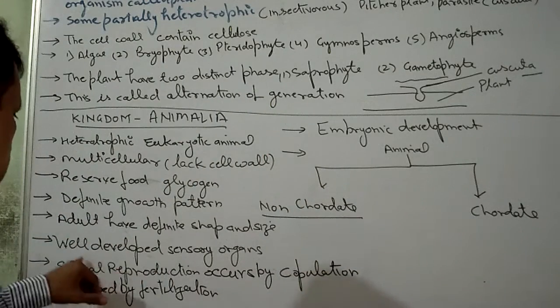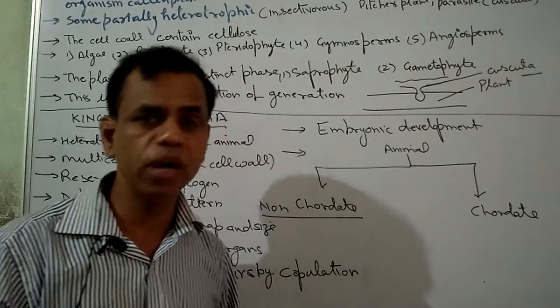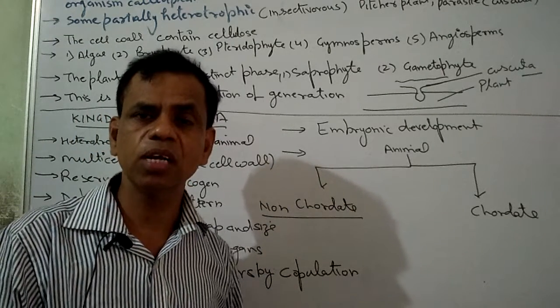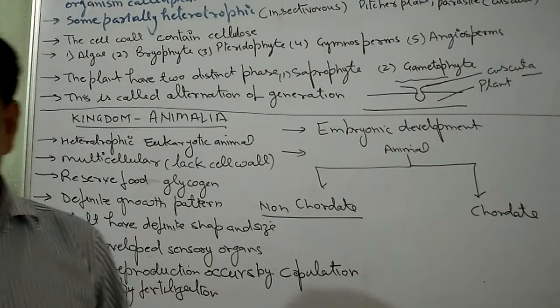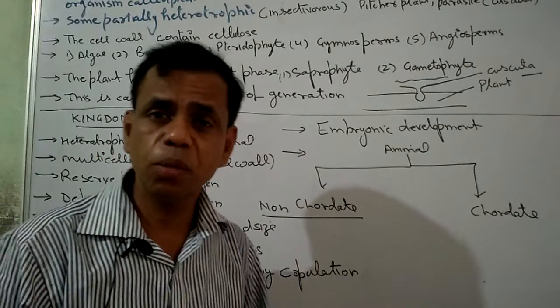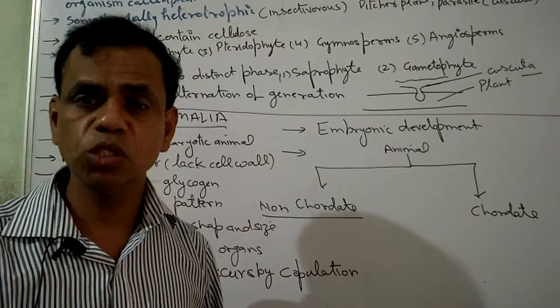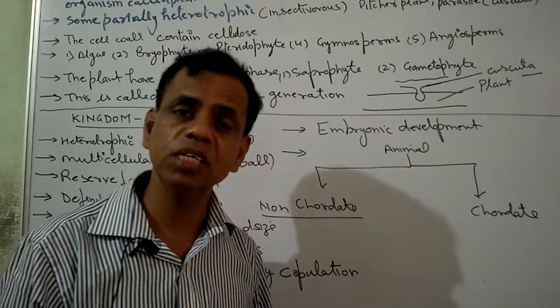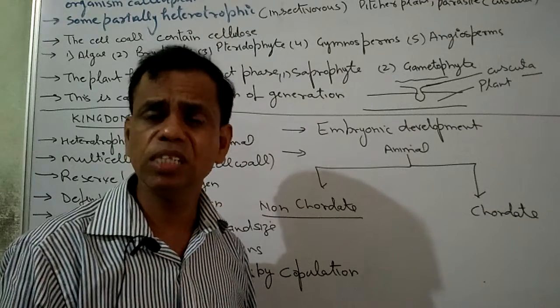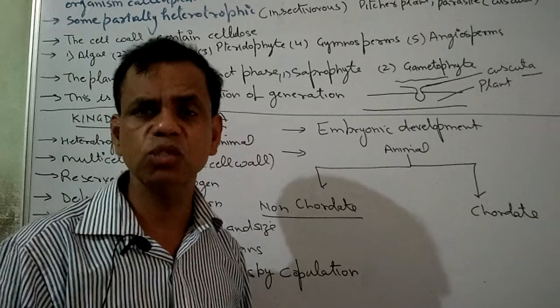Animals have definite shape and size. Well-developed sensory organs. The sensory organs are well developed. You can say that animals are more advanced if we talk about mammals. The mammals are the best organisms. The phyla include Protozoa, Porifera, Coelenterata, Platyhelminthes, Aschelminthes, Annelida, Arthropoda, Mollusca, Echinodermata, then Chordata including Pisces, Amphibians, Reptiles, Birds, and Mammals.